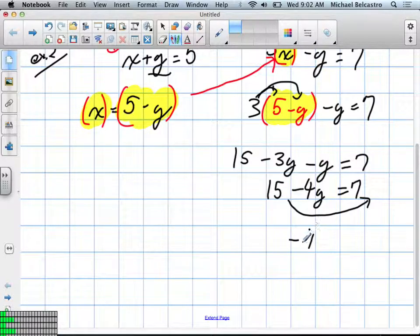So we get negative 4y is equal to 7 minus 15. What is 7 minus 15? Negative 8. Good. Negative 8.